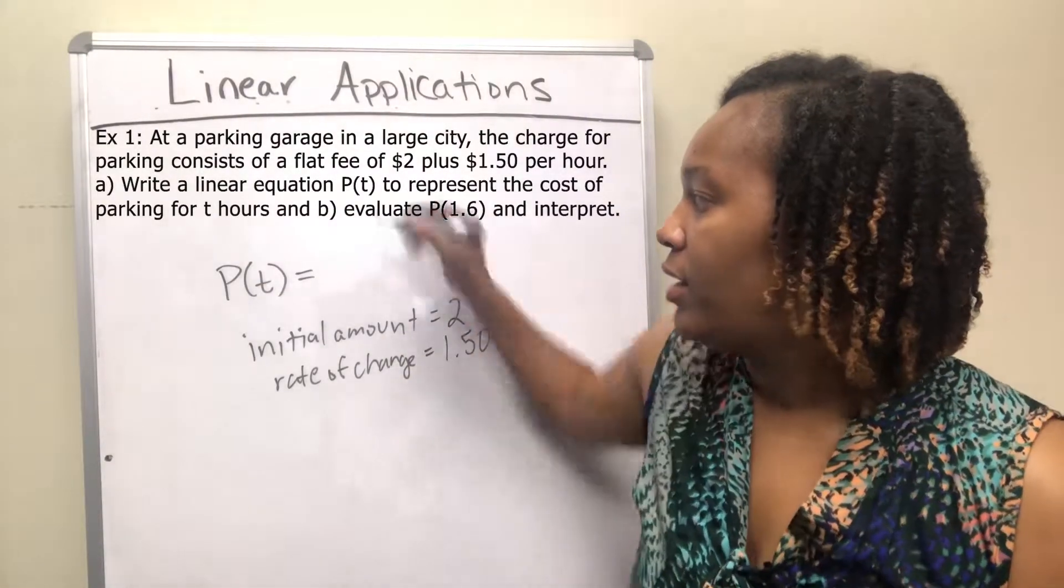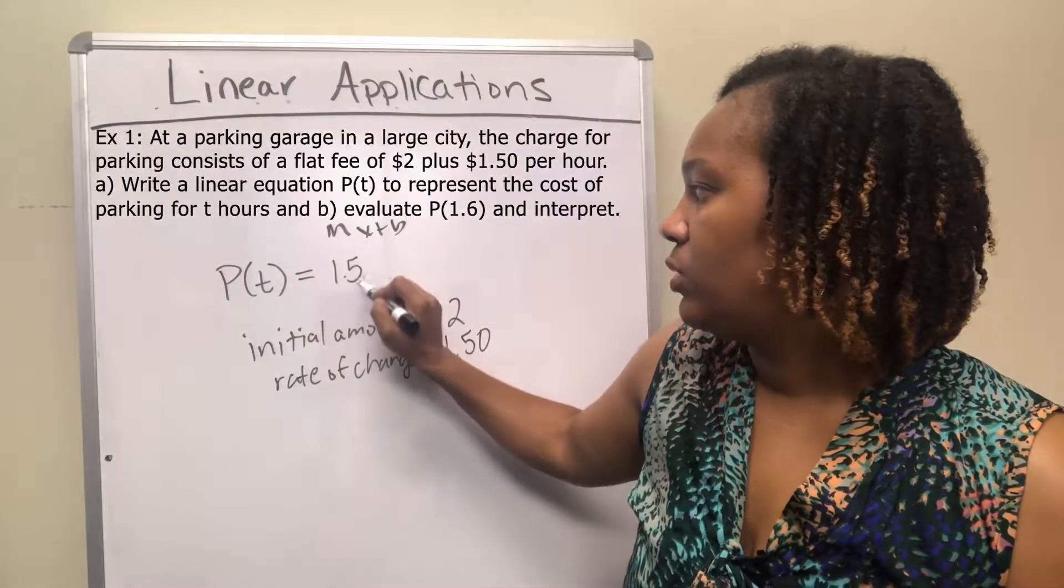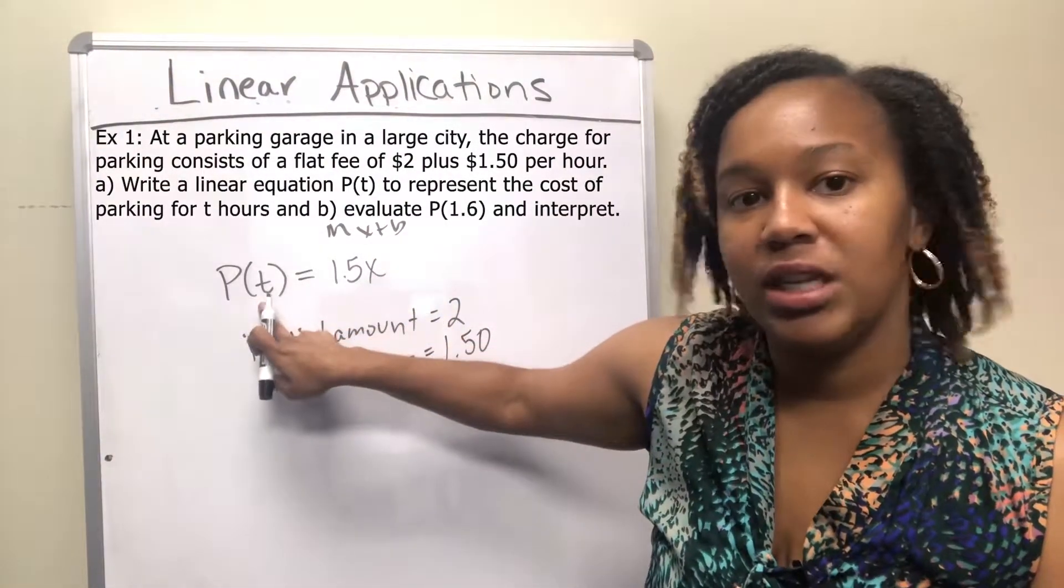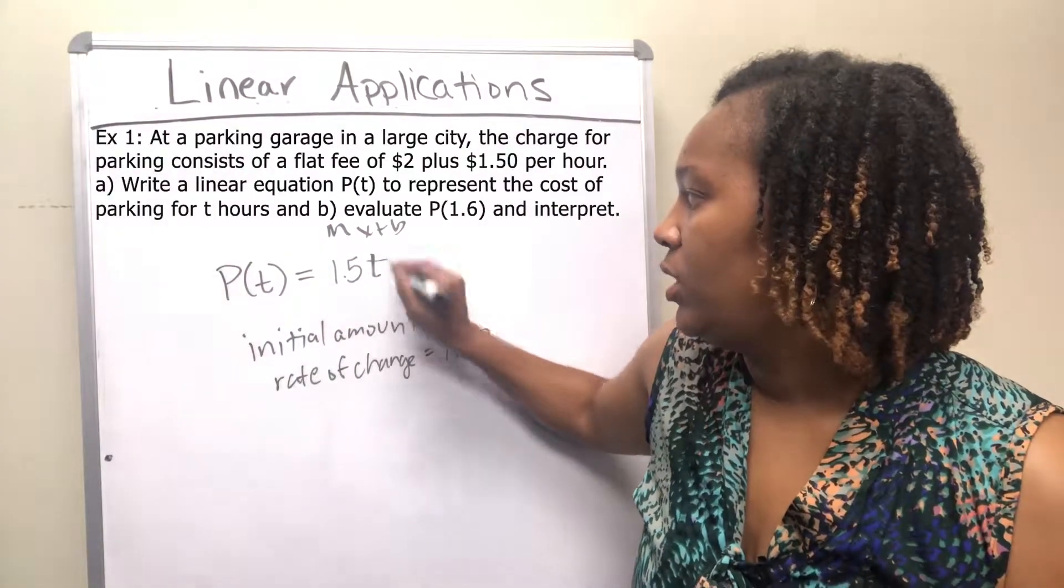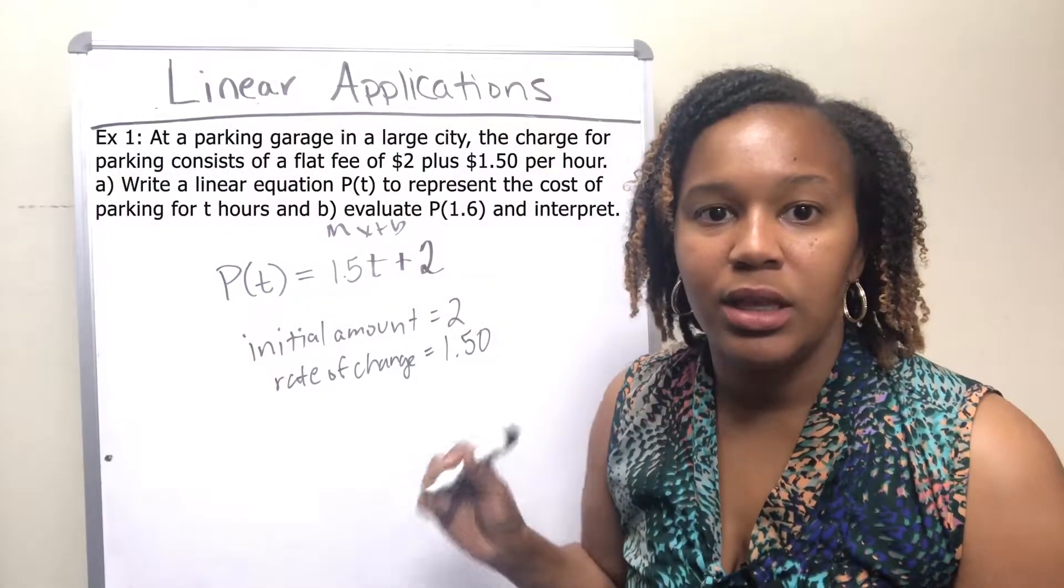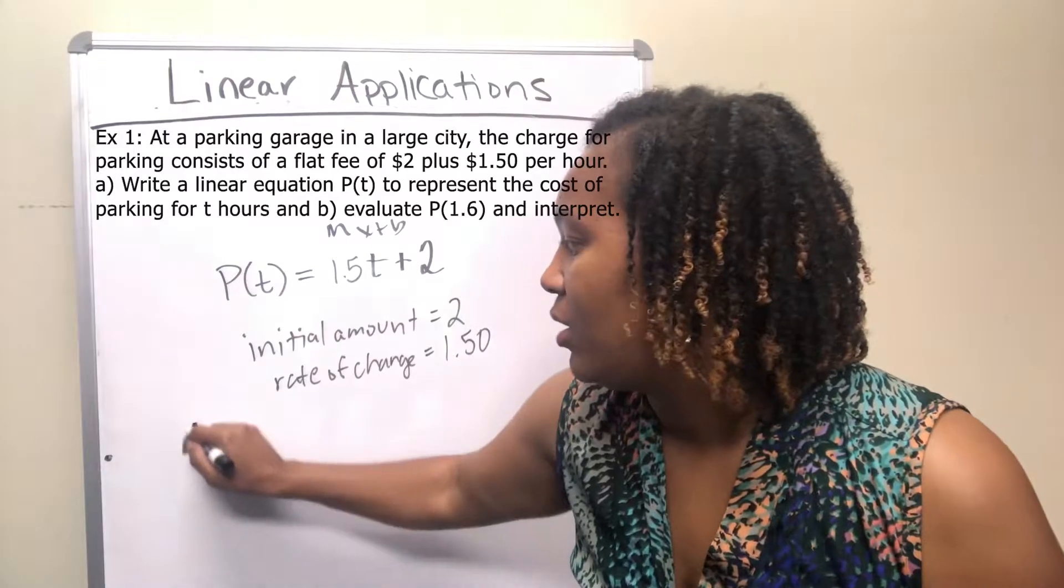So if we write it in the form of mx plus b, you're going to get your rate of change, which is $1.50 times x, well it's usually x, but since it says to write it as p of t, you're going to replace your x with the t plus the initial amount, which is 2. And so this is how you write the linear equation for this problem.